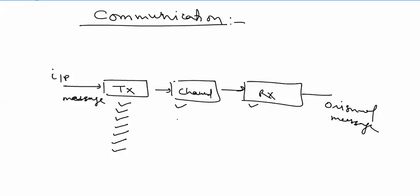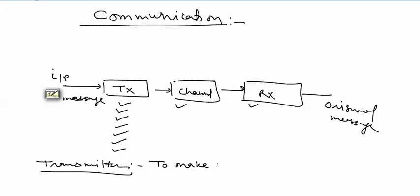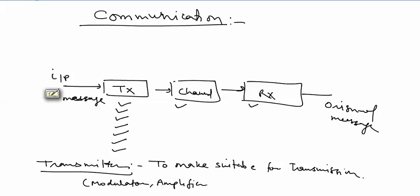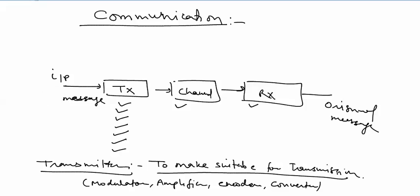The basic idea of communication is the exchange of information between two or more systems. The three main blocks for communication are transmitter, channel, and receiver. The purpose of the transmitter is to make the signal suitable for transmission. The transmitter may include a modulator, amplifier — voltage or power — encoding encoder, and converter from one form to another. All these parts work for one purpose: make the signal suitable for transmission.